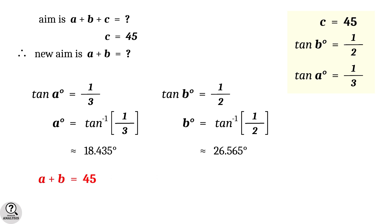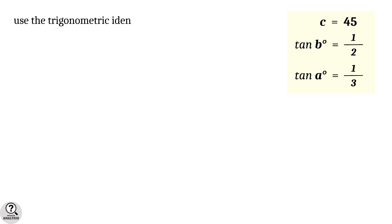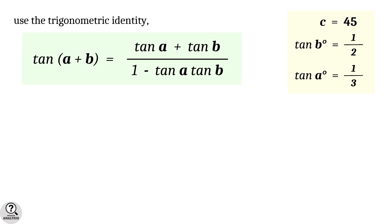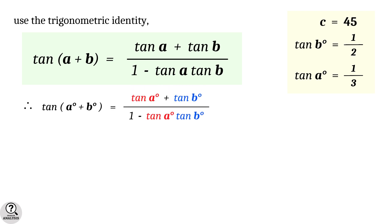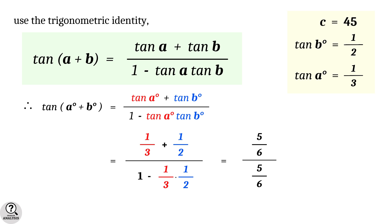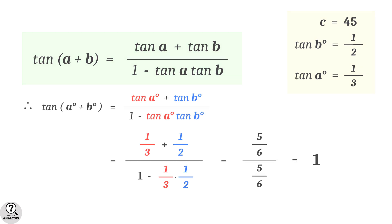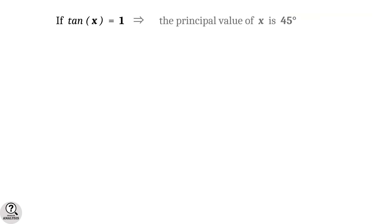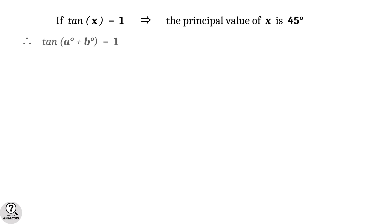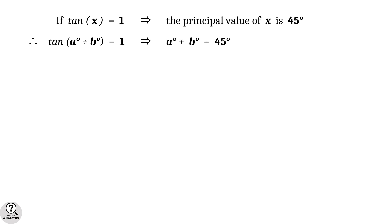To prove this exactly, we use the trigonometric identity: tan(a + b) equals (tan a + tan b) divided by (1 minus tan a times tan b). Substituting the values gives (1/3 + 1/2) divided by (1 minus 1/3 times 1/2), which equals 5/6 divided by 5/6, equal to 1. Since tan x equal to 1 implies x equal to 45 degrees, we conclude tan(a + b) equal to 1, therefore a plus b equal to 45 degrees.